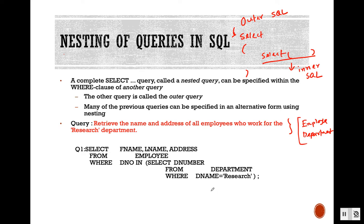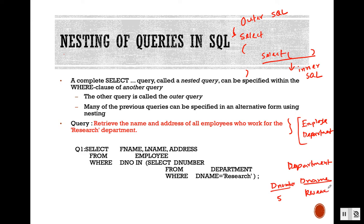We can solve the same problem using a different style of SQL — using a nested query. If we look at the query, we are retrieving the name and address of all employees who work for the research department. The department table has the information of dname and dnumber, so we need to find what is the dnumber of the research department.